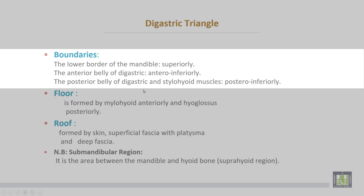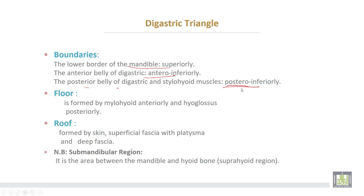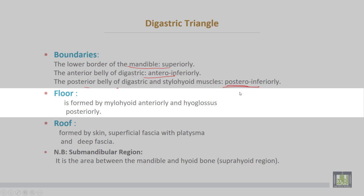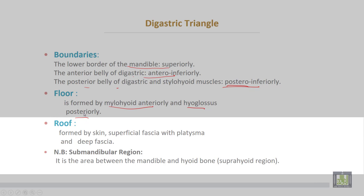The digastric triangle is bounded by the lower border of the mandible superiorly, the anterior belly of the digastric muscle anteroinferiorly, and the posterior belly of the digastric with the stylohyoid muscle posteroinferiorly. The floor of the digastric triangle is formed by the mylohyoid muscle anteriorly and the hyoglossus muscle posteriorly. The roof is formed by the skin and superficial fascia containing the platysma, and the deep fascia.